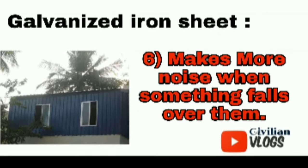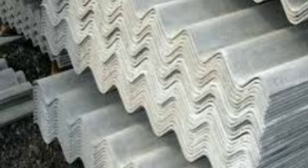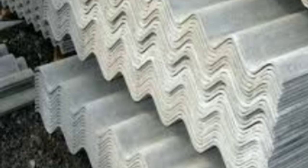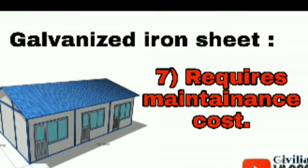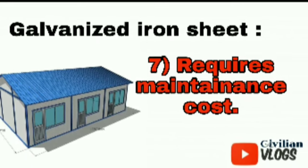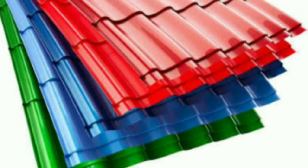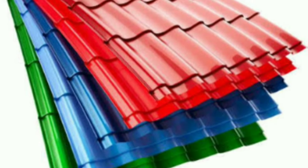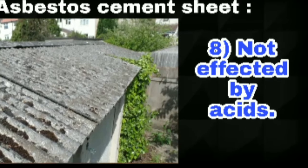Asbestos cement sheet maintenance cost is not required. But if there is a problem, there will be a break. For galvanized iron sheet, maintenance is required. If there is a break, it will not be obvious. If there is rain, it will rust. So regular maintenance is required.